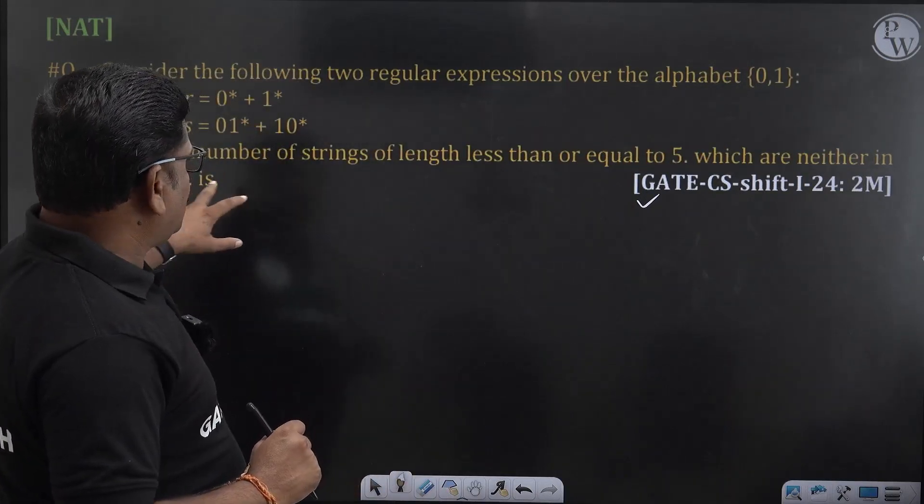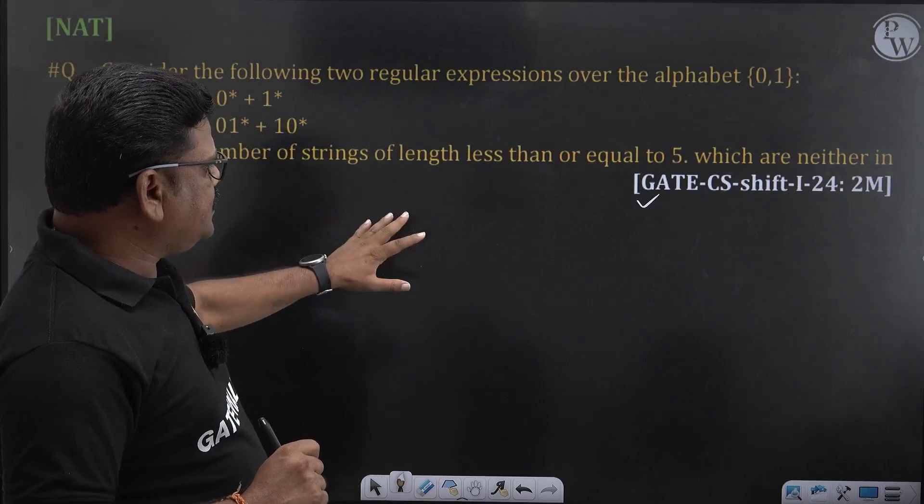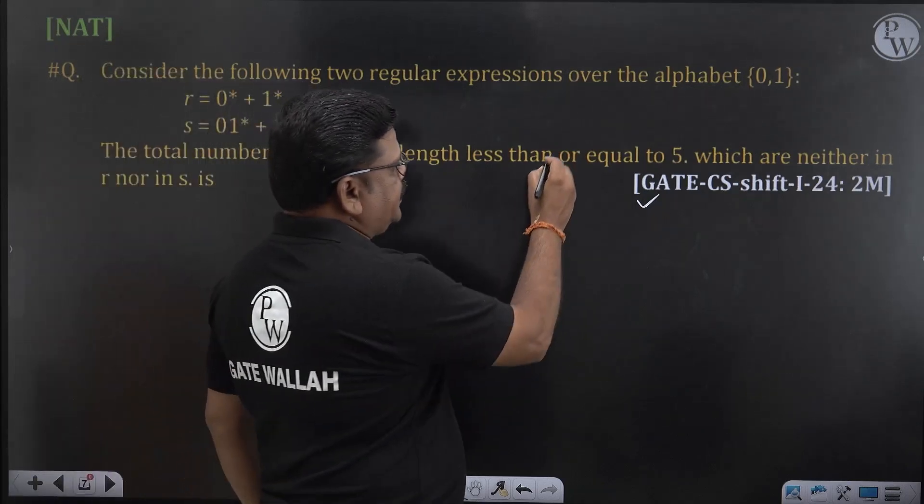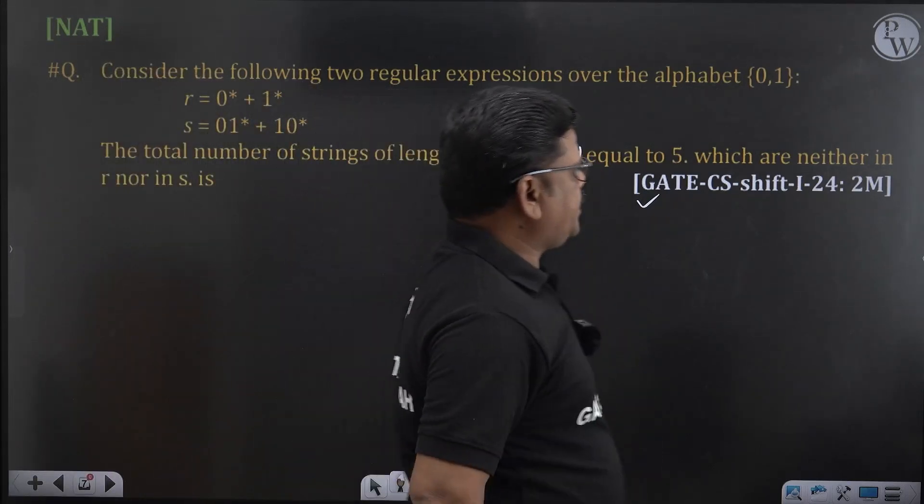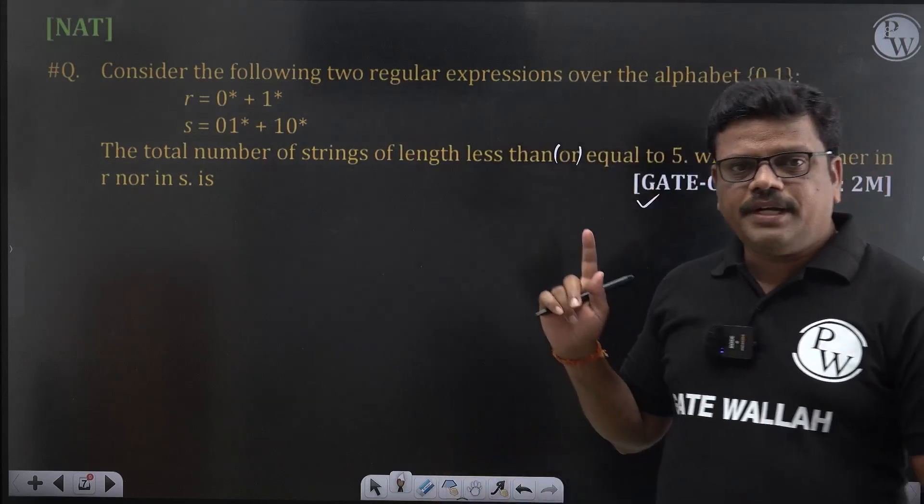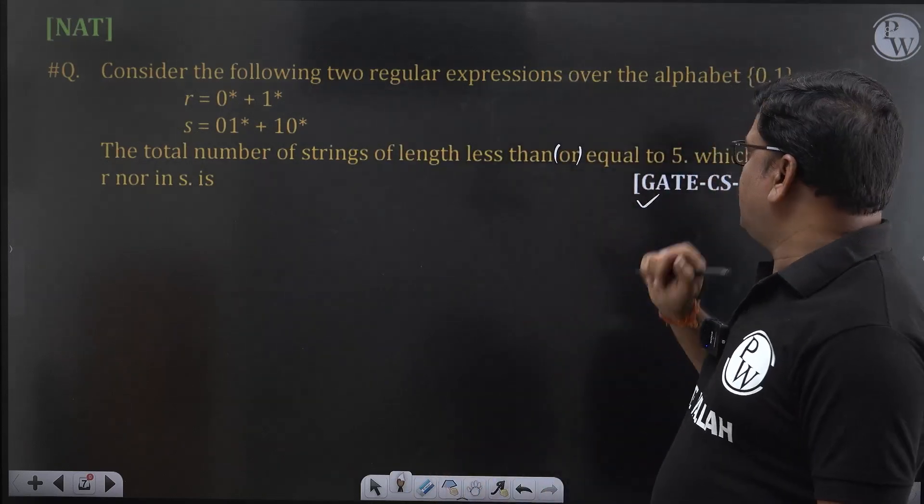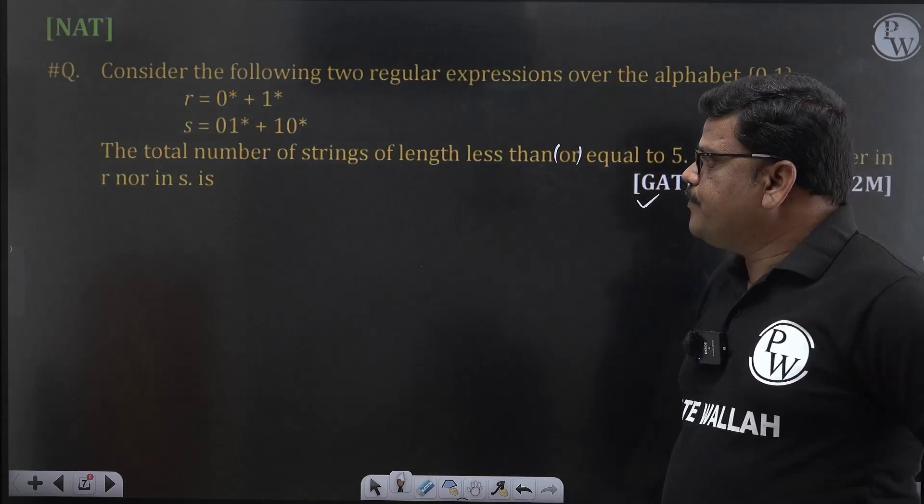Then the question is: total number of strings of length less than or equal to 5 over the alphabet {0,1}. This is the alphabet here.